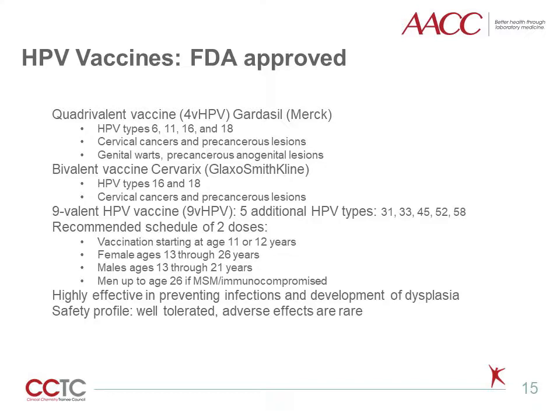The recommended vaccination schedule is 2 doses at ages 11 or 12 years. It is also recommended for females 13 through 26 years who have not previously been vaccinated, males ages 13 through 21, and men up to age 26 if having sex with men or immunocompromised. The vaccines have been shown to be highly effective in preventing infections and development of dysplastic lesions. In general, the HPV vaccines are well-tolerated and adverse reactions are rare, with the most common adverse reactions limited to local injection site reactions and systemic effects being extremely rare.